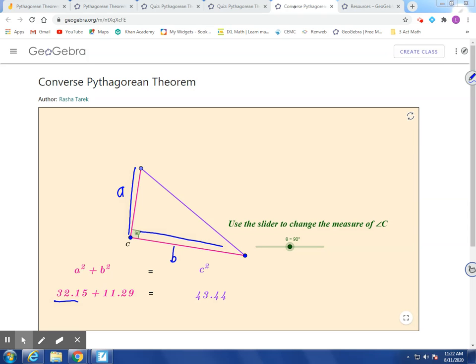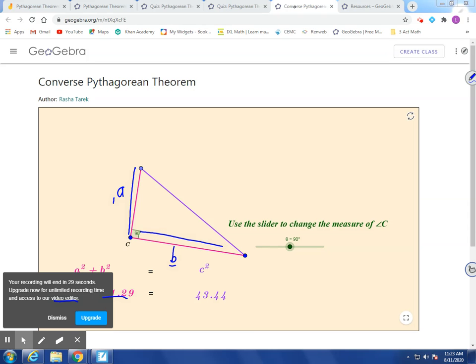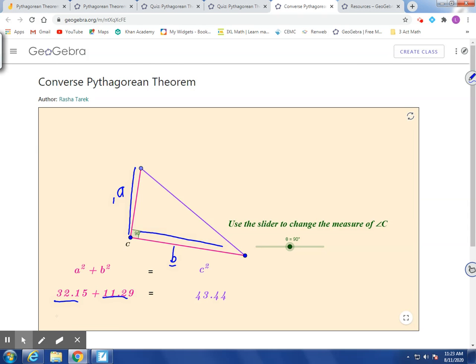Take the length of b, square that, which is 11 point, or actually the other way around, I guess. So this is the 11, and then this is the 32.15. And when there's a 90 degree angle,